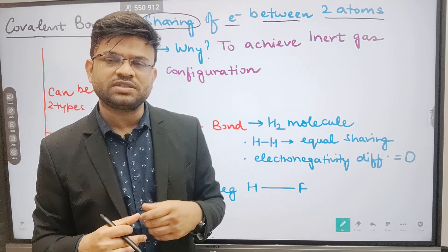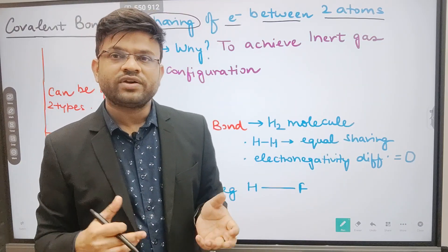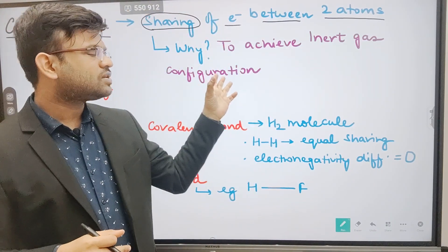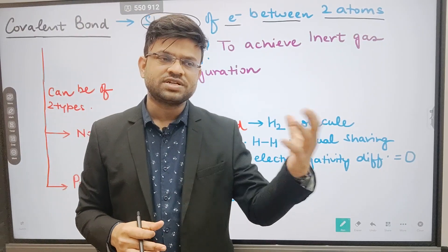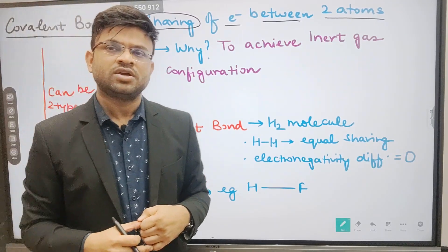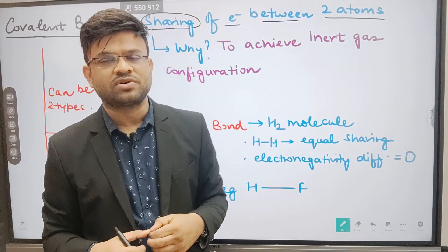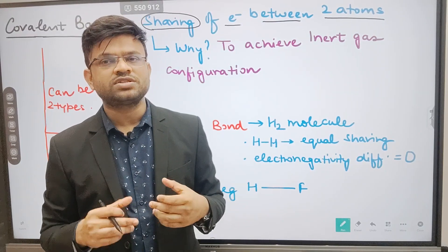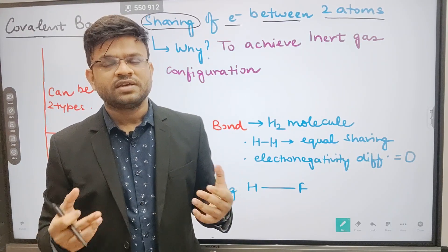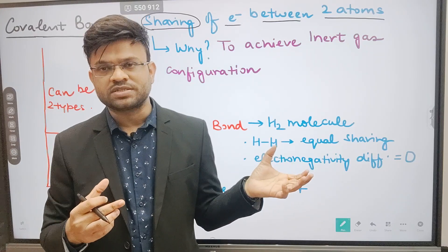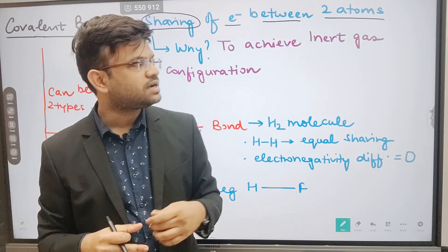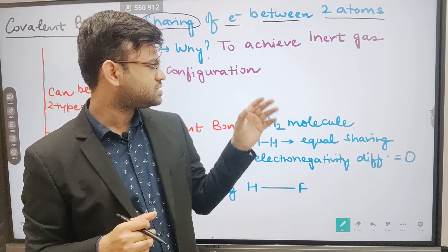Why would two atoms want to share electrons? Because I would definitely have a benefit — then only I would share my things with you. The benefit an atom gets when it shares the electron with others is that it gets the inert state or inert gas configuration. Inert gases have eight electrons in their outermost shell, so every atom wants to attain that inert gas configuration — that is why they want to share their electrons with others.